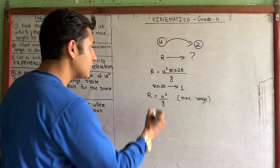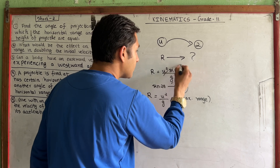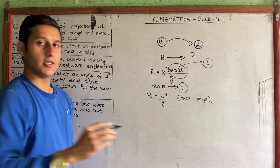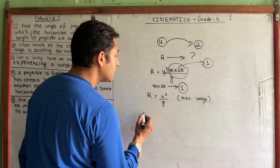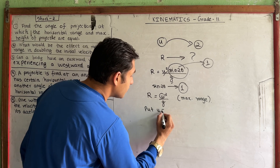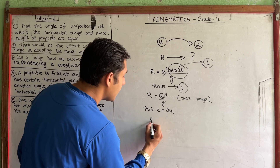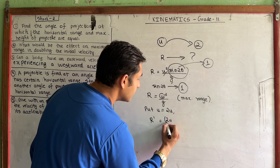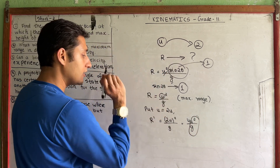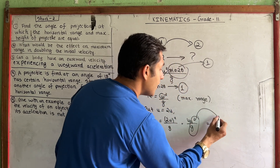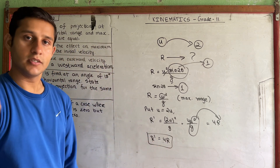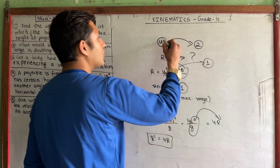If we double the initial velocity, u becomes 2u. The new range R' = (2u)² / g = 4u² / g = 4R. So when the initial velocity is doubled, the maximum range becomes 4 times the original range.